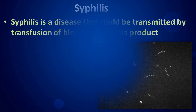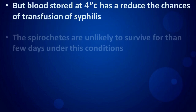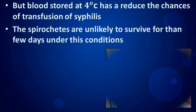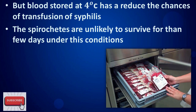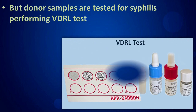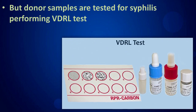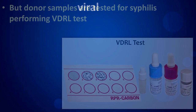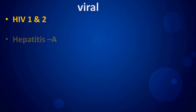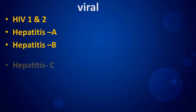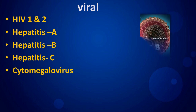Blood stored at four degrees Celsius has a reduced chance of transmitting syphilis. The spirochetes are unlikely to survive for more than a few days under these conditions. Donor samples are tested for syphilis by performing the VDRL test.